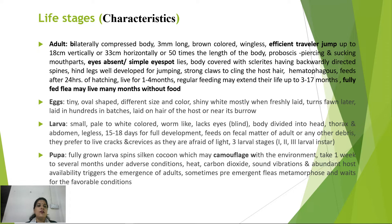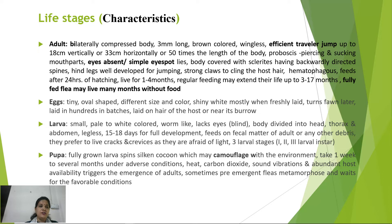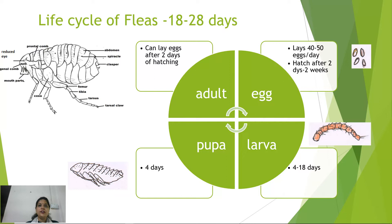The fully grown third larval instar spins a silken cocoon and undergoes pupation, camouflaging with the environment. This stage takes one week to several months under adverse conditions. The pupa is sensitive to heat, carbon dioxide, sound vibrations, and abundance cues, which trigger adult emergence. Pre-emergent fleas can also emerge under unfavorable conditions and wait as adults for favorable conditions. The life cycle takes 18 to 28 days to complete.